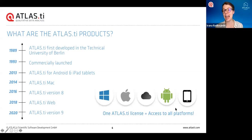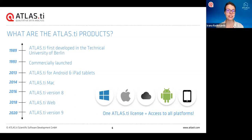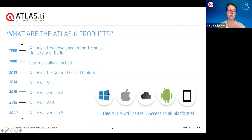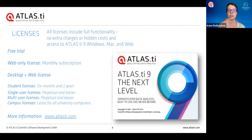We also have an Atlas TI app for Android tablets or iPads. This mobile app is always offered for free whether or not you have a license. You can go to the Google Play Store or the Apple Store and download Atlas TI. Any project from the mobile version or the web version can be exported and then imported into the desktop versions, so you can keep working on it there — you have that movement between them.